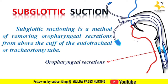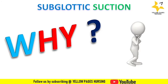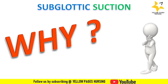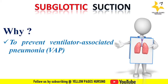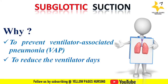This pooling of oropharyngeal secretions above the endotracheal tube cuff may lead to aspiration. Moreover, if the endotracheal tube cuff pressure is not adequate, secretions may slip down into the trachea, leading to ventilator-associated pneumonia — otherwise called VAP. Hence, subglottic suction is included as one of the interventions in the VAP bundle.